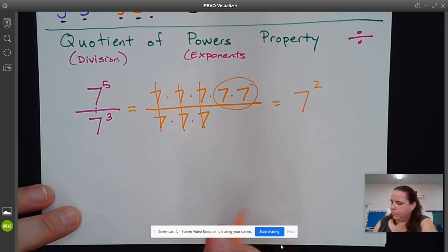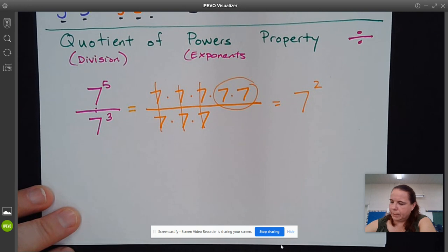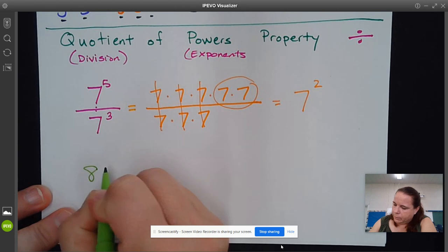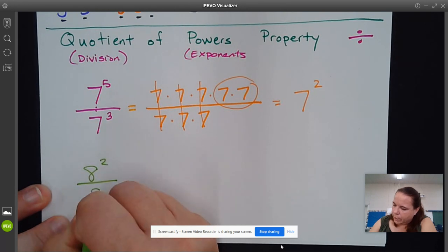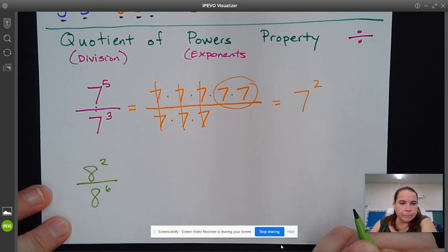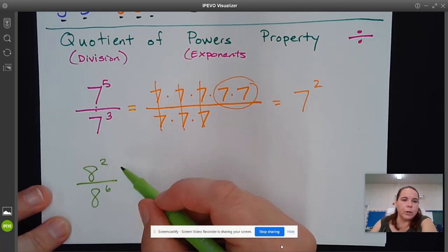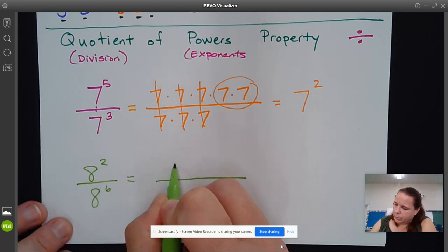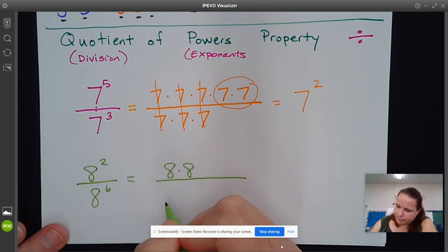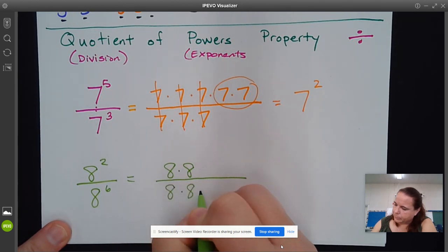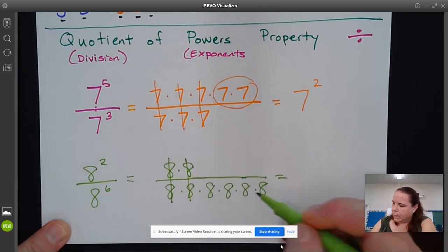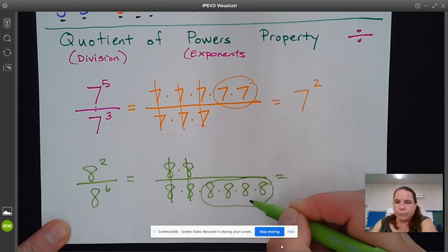Now, what happens with a different example: 8^2 over 8^6. So we have fewer on top. What you're going to do is take the top, which is 8×8, and expand it out. For 8^6, you can see that these cancel out, and what you're left with is 4 eights on the bottom.